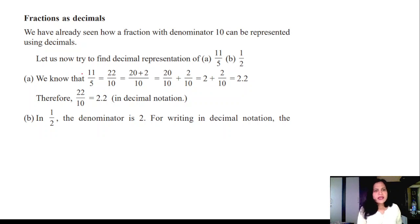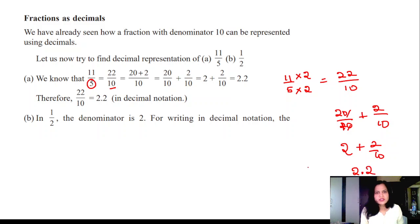Fractions as decimals. Now every fraction can be written in the form of decimals by converting the denominator to 10 or 100 or 1000, then you can write them in decimal form. How to do this? We know 11 by 5, so this is 5. We should convert this 5 into 10. 11 by 5, multiply 5 by 2 to make this 10 by 2 is 10, that's why you should multiply numerator also by 2, then you will get 22 by 10. Now easily you can write this: two 10 groups are there, so it is 2 plus 2 by 10, that is 2.2.